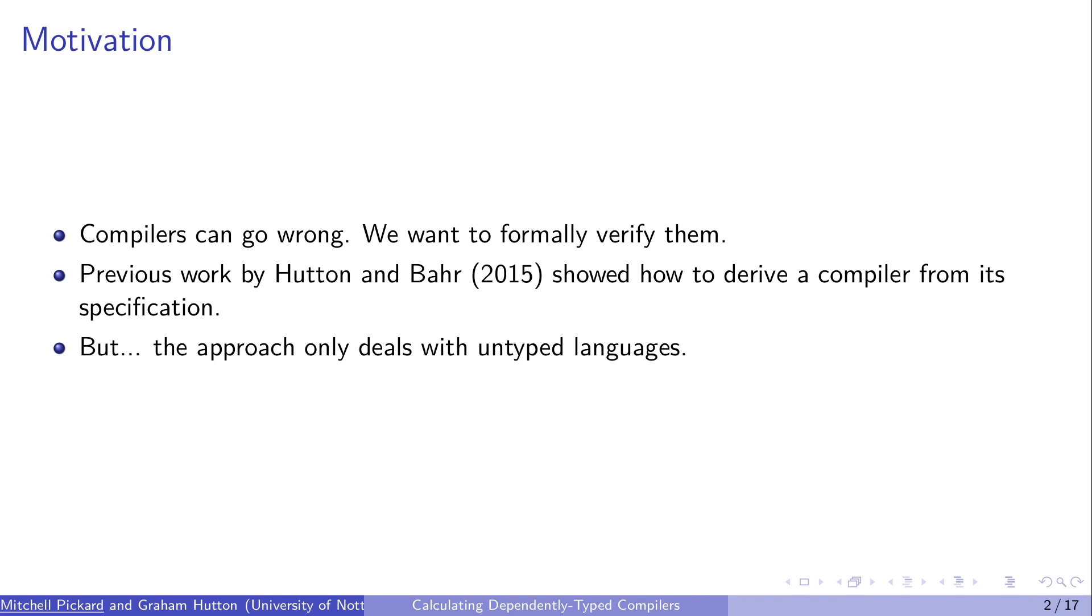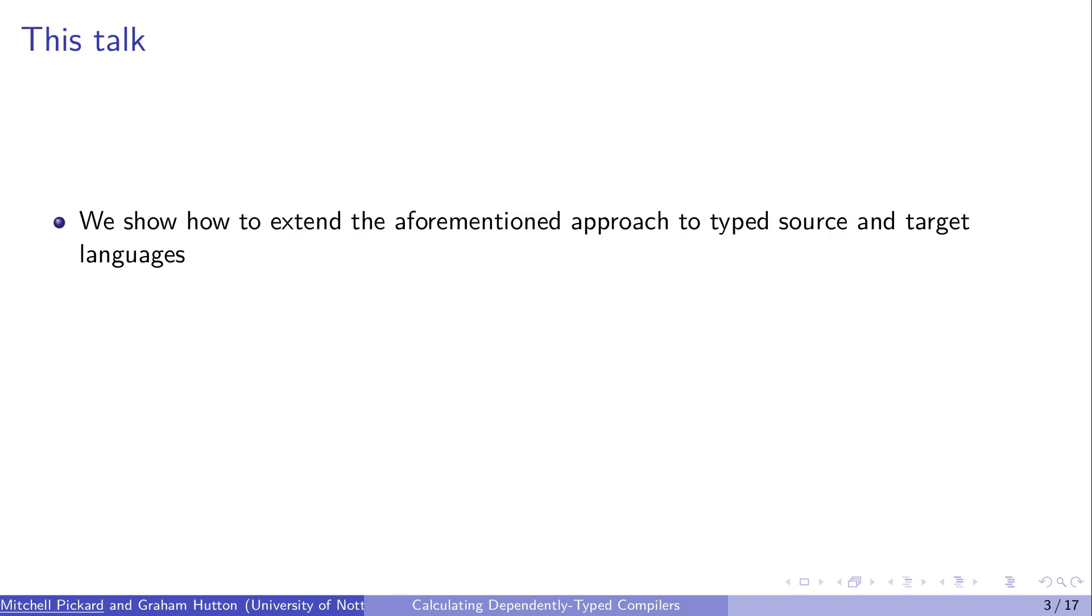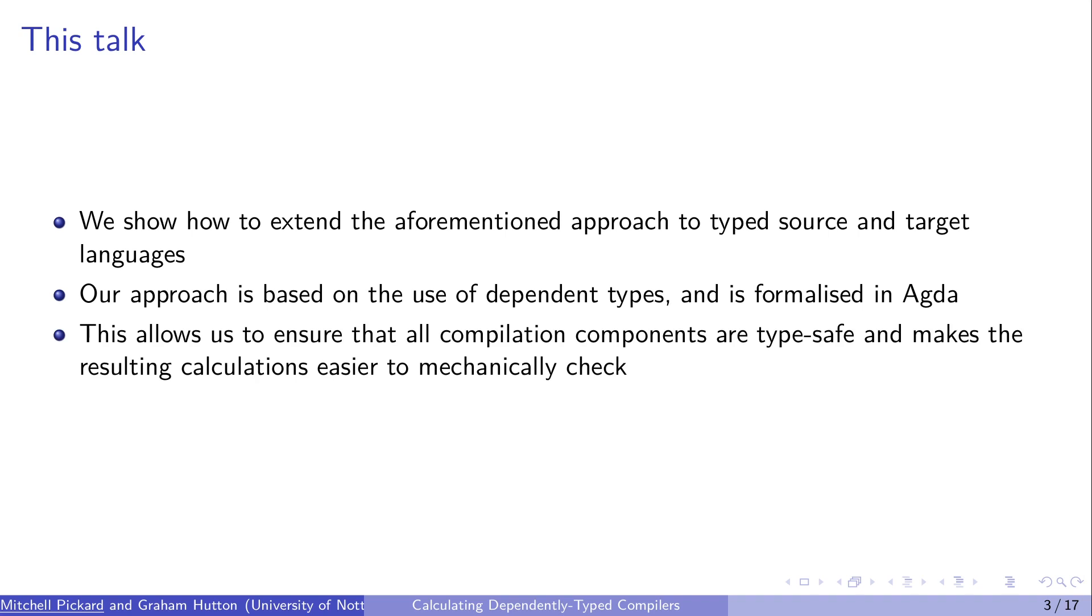But their approach so far only deals with untyped languages. We want to show how to extend that approach to typed source and target languages. Our approach is based on the use of dependent types and is completely formalized in Agda. Whereas the previous work is done in Haskell, the use of dependent types allows us to make sure that everything is completely type safe.